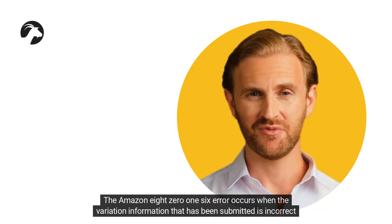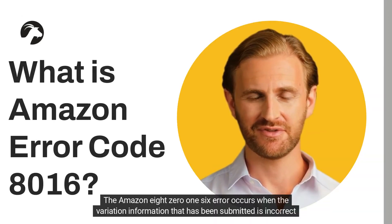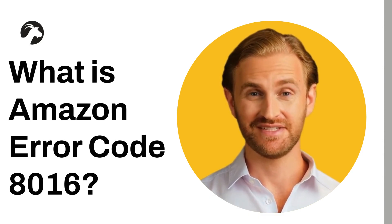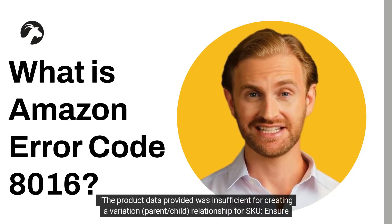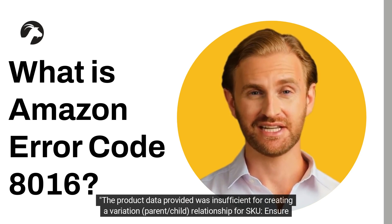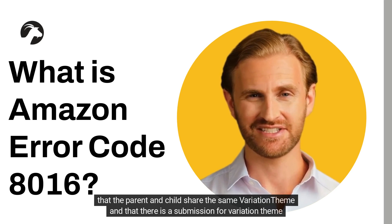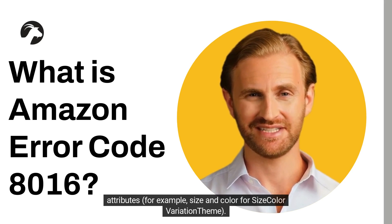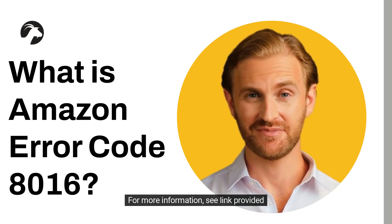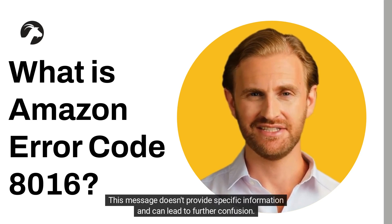The Amazon Error Code 8016 occurs when the variation information that has been submitted is incorrect or incomplete. The exact error message is: 'The product data provided was insufficient for creating a variation parent/child relationship for SKU. Ensure that the parent and child share the same variation theme and that there is a submission for variation theme attributes, for example size and color for a size-color variation theme.' This message doesn't provide specific information and can lead to further confusion.